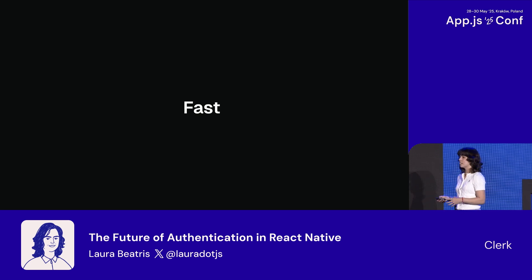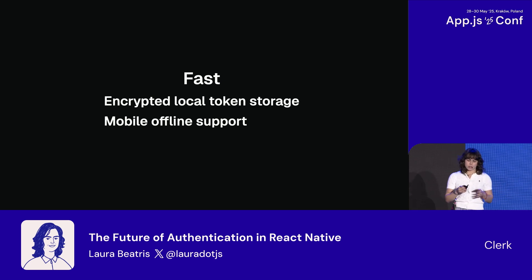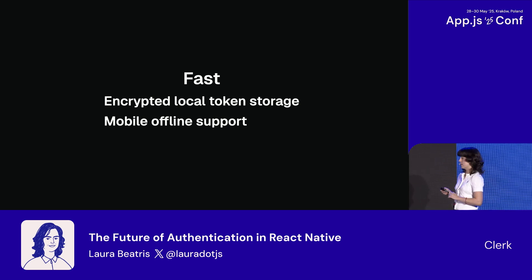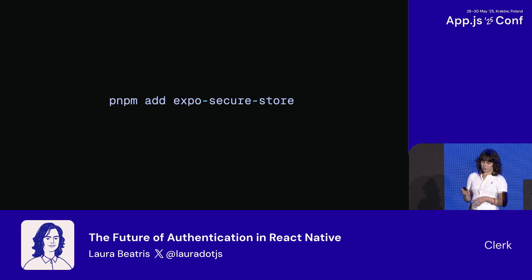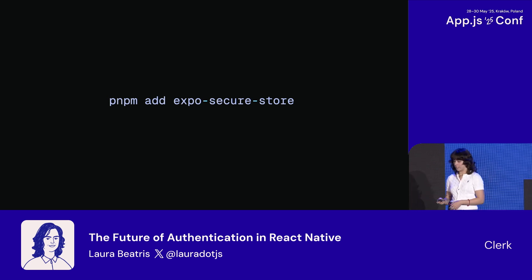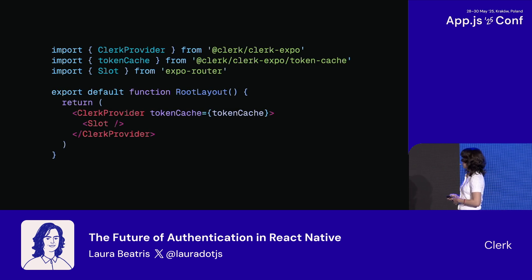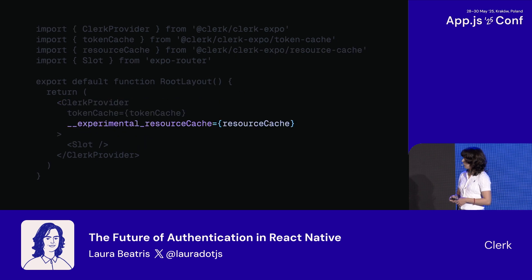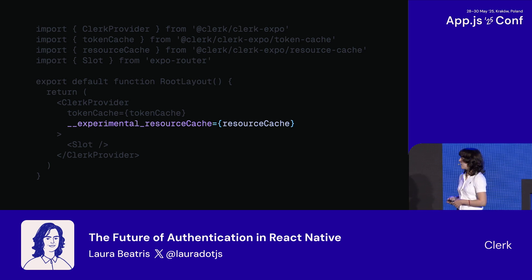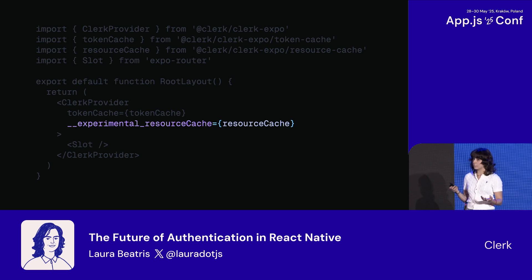We need to make it fast from a session initialization perspective. Two things are hugely important here. First, encrypted local token storage. Second, mobile offline support. In Expo apps, the recommended way to store sensitive data such as tokens is by using the Expo SecureStore package, which encrypts the data before storing it. We leverage this with a token cache that can be injected into the React provider. And not only that — we also released a couple of months ago an experimental resource cache, so that you can have reliability in cases of bandwidth issues that are so common, and to bootstrap offline resources around auth.